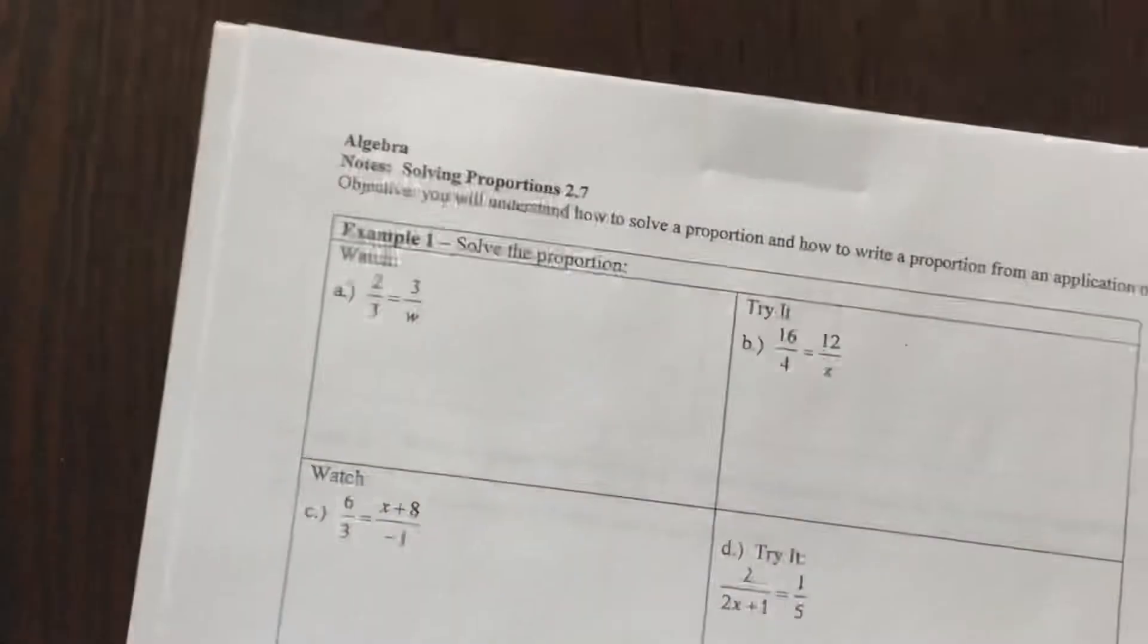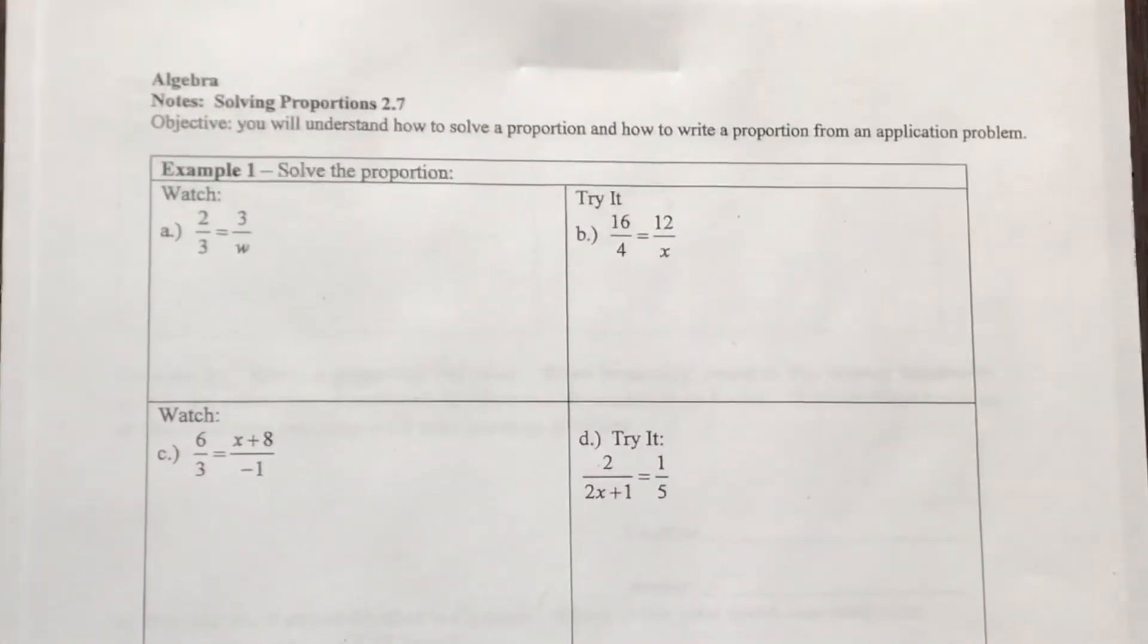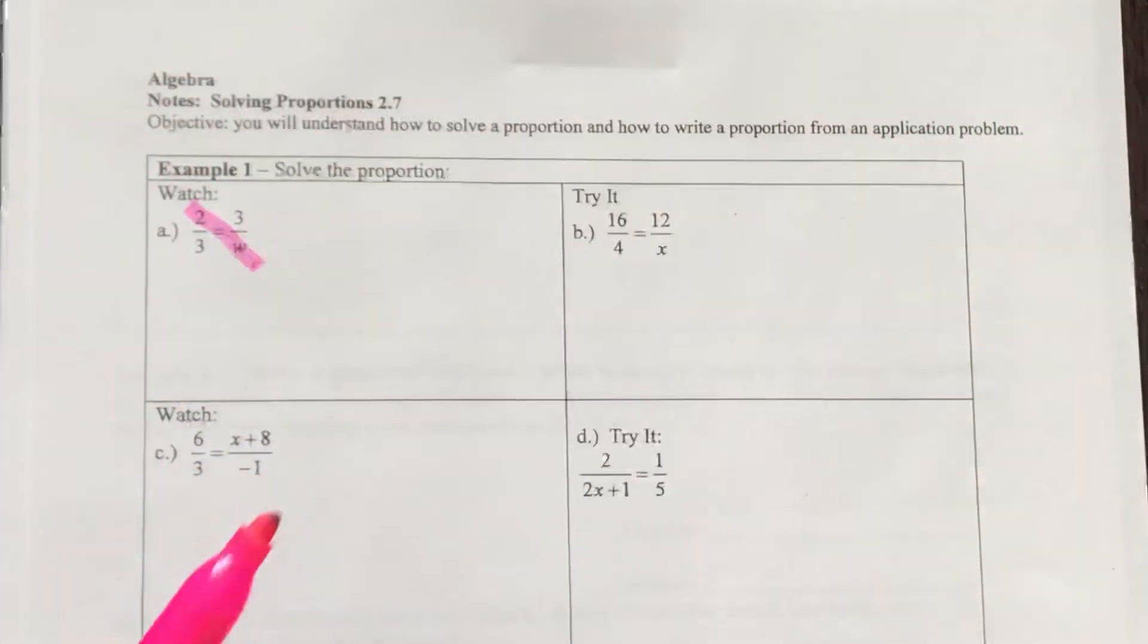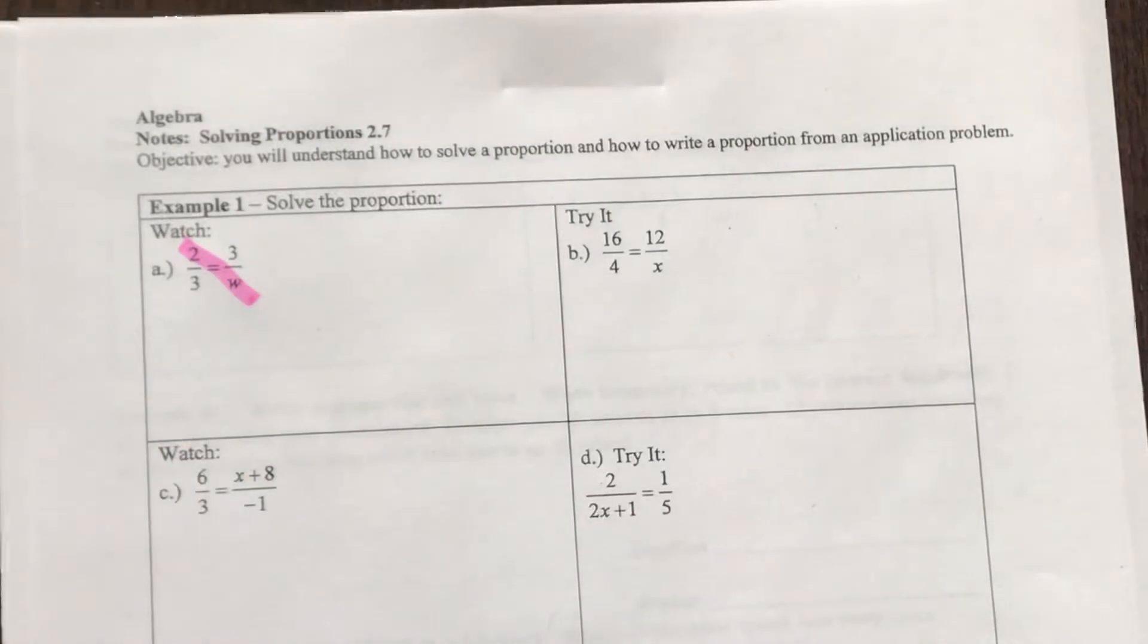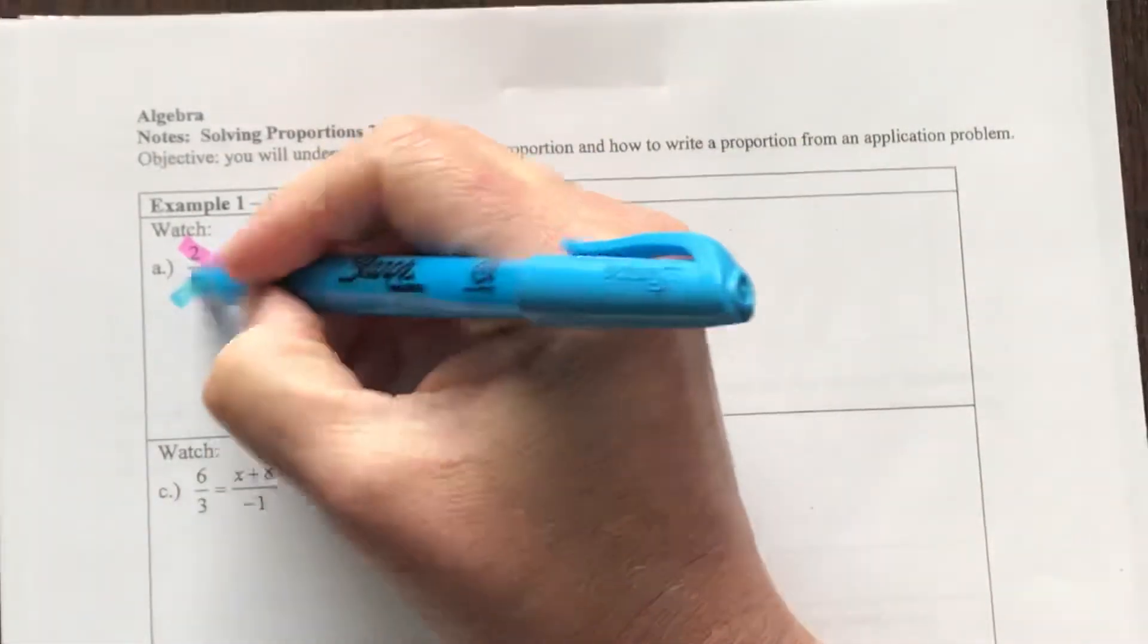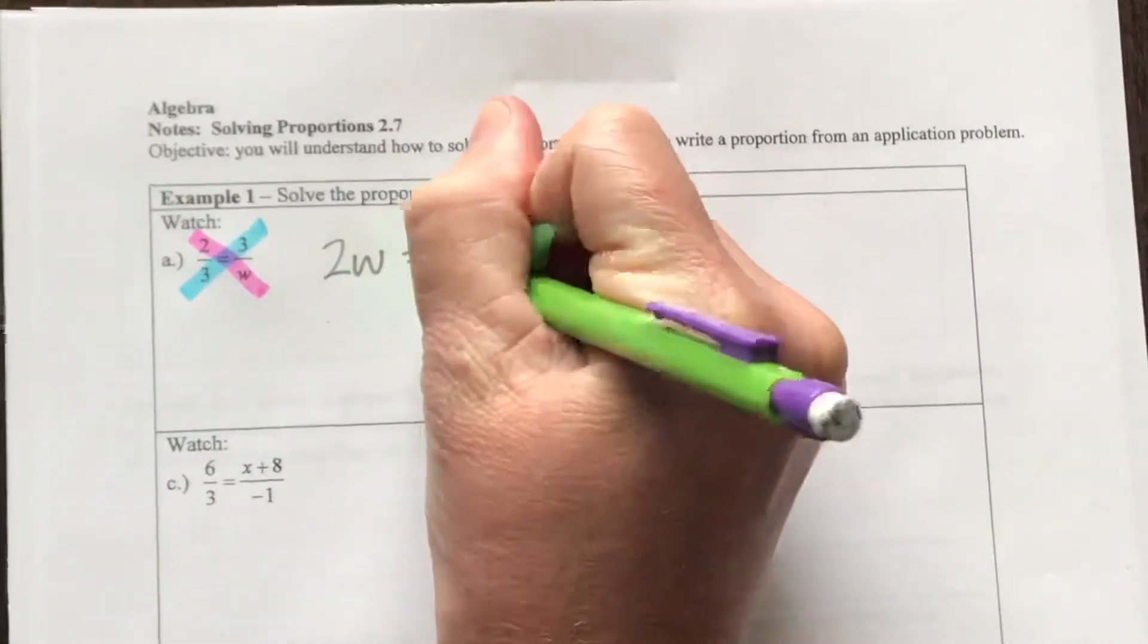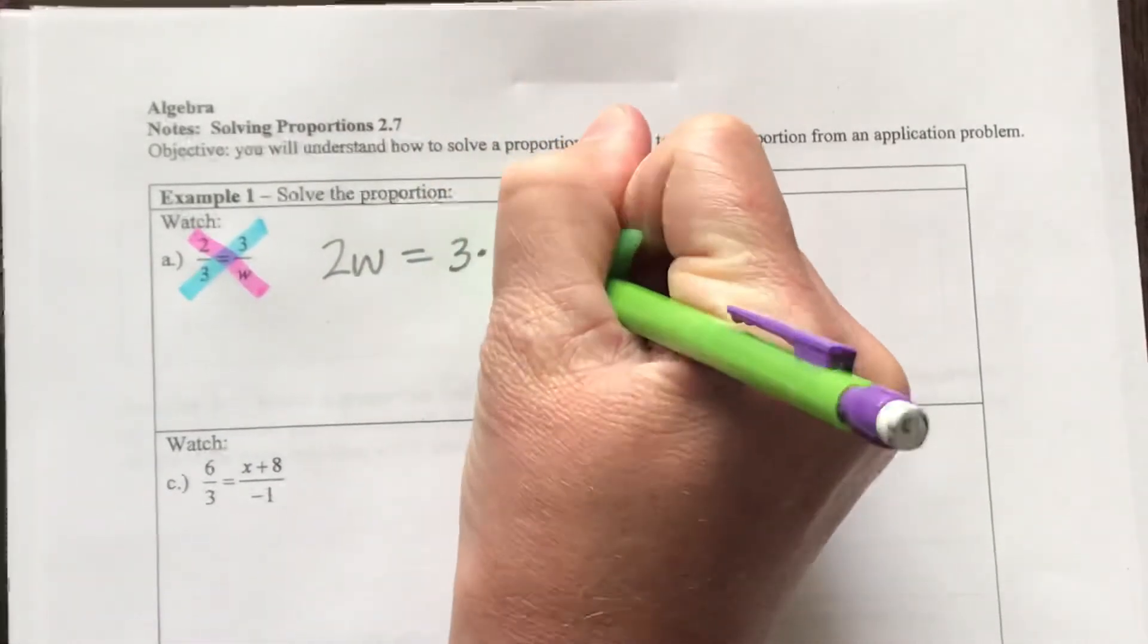So now for the couple examples that I'm going to go through with you here, I'm going to start with this example. So again, cross multiplying. So if I take two times W, that will equal three times three.